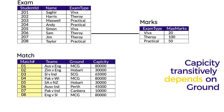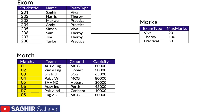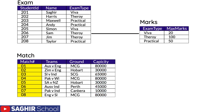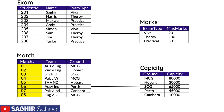Match number is the primary key; teams, ground, and capacity are non-primary key columns. If the match is played at MCG, the capacity is 80,000; if played at Hobart, it's 30,000. We already know the capacity of each ground, so if match number nine is played at MCG, we automatically put 80,000 in the capacity column. Capacity is transitively depending on ground, again violating Third Normal Form. We break the table, taking away the transitive part — capacity — and putting it in another table.